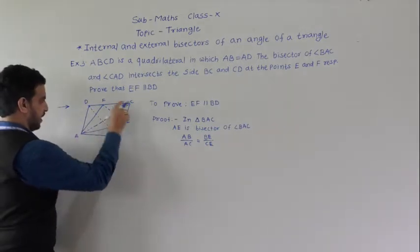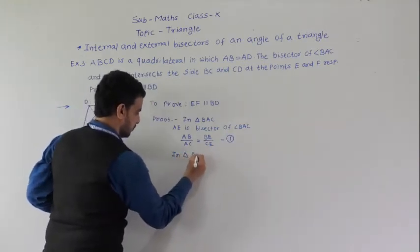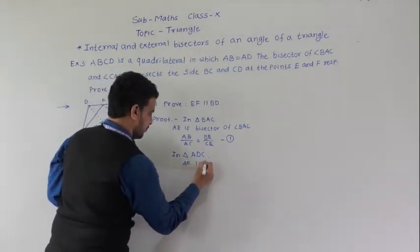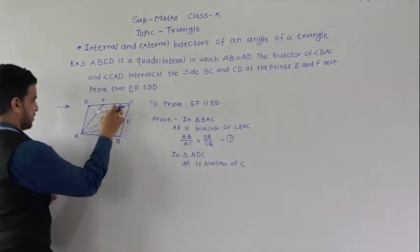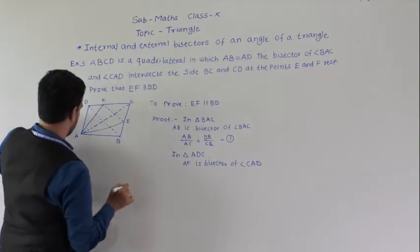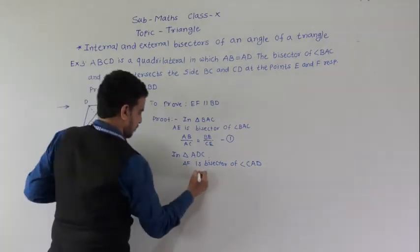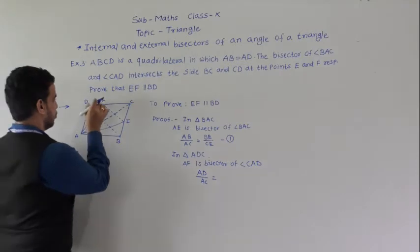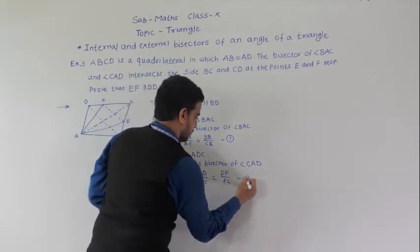In triangle ADC, AF is the bisector of angle DAC. Therefore AD/AC = DF/FC. This is equation 2.